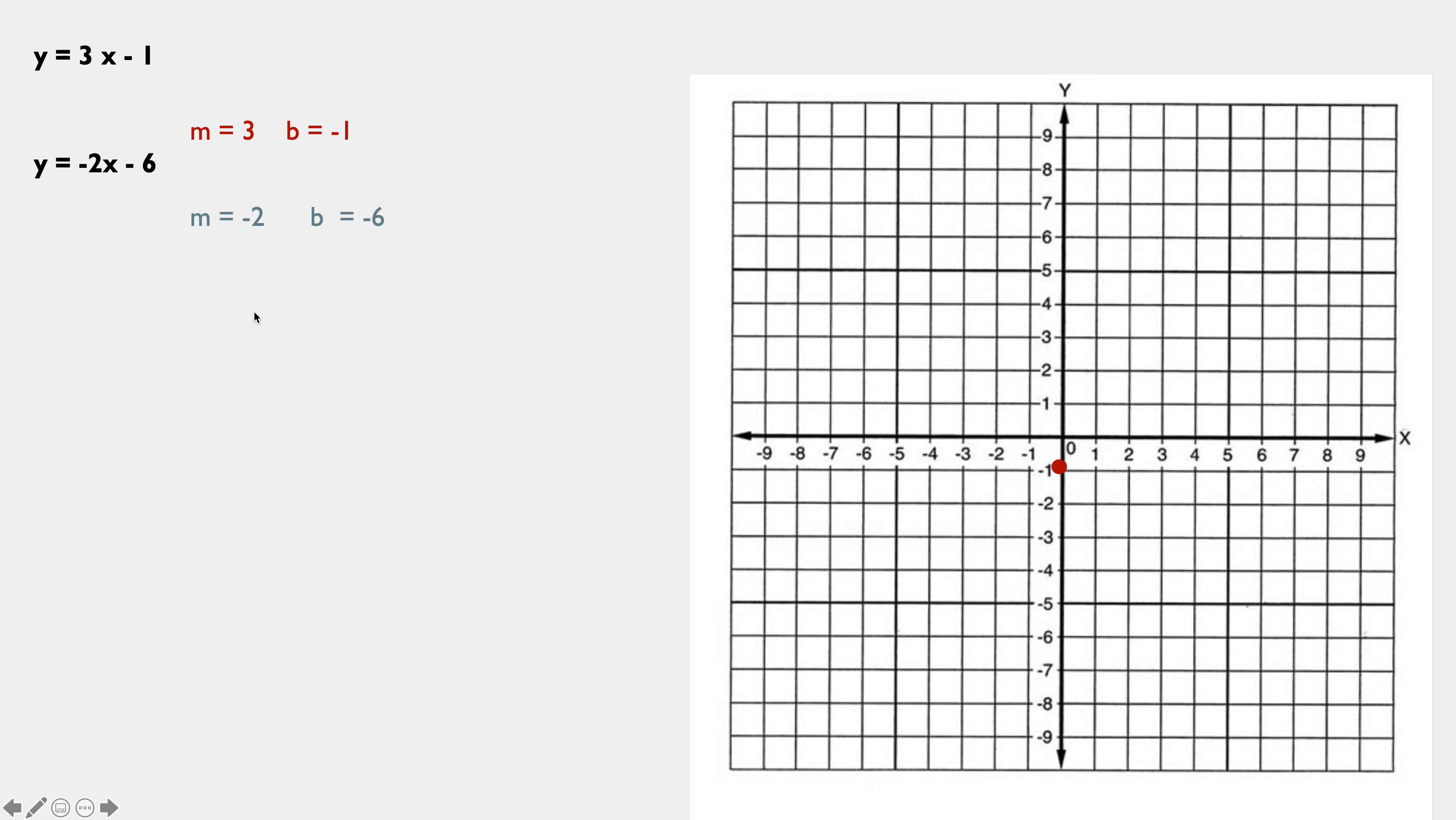Let's graph the red one. I begin, that's why we have the b there at negative 1. Up 3 over 1. Up 3 over 1. Connect the dot. There's my red line, which is a picture of every single coordinate pair that satisfies or checks in the equation y equals 3x minus 1. If it is not on that line, it does not check. Simple as that.